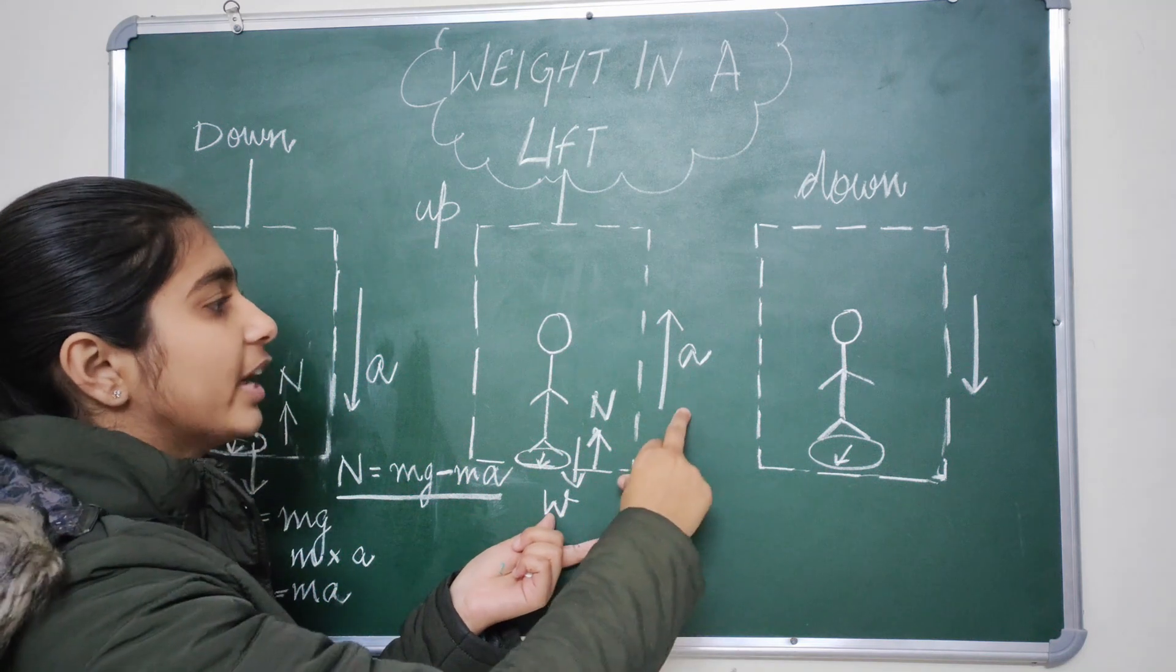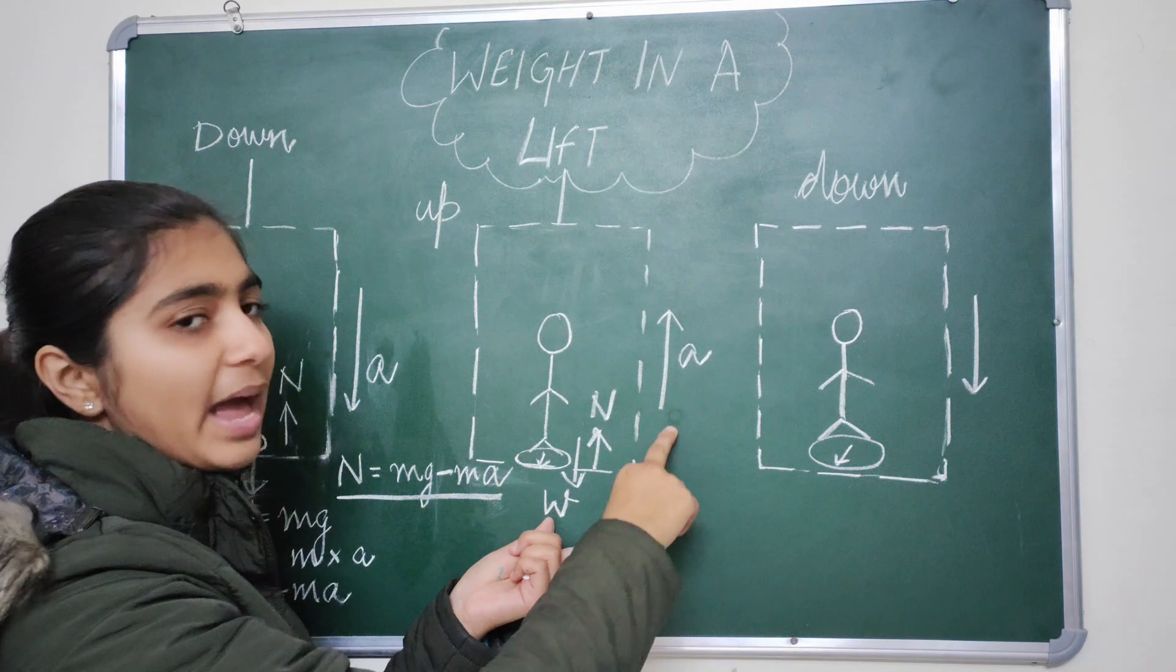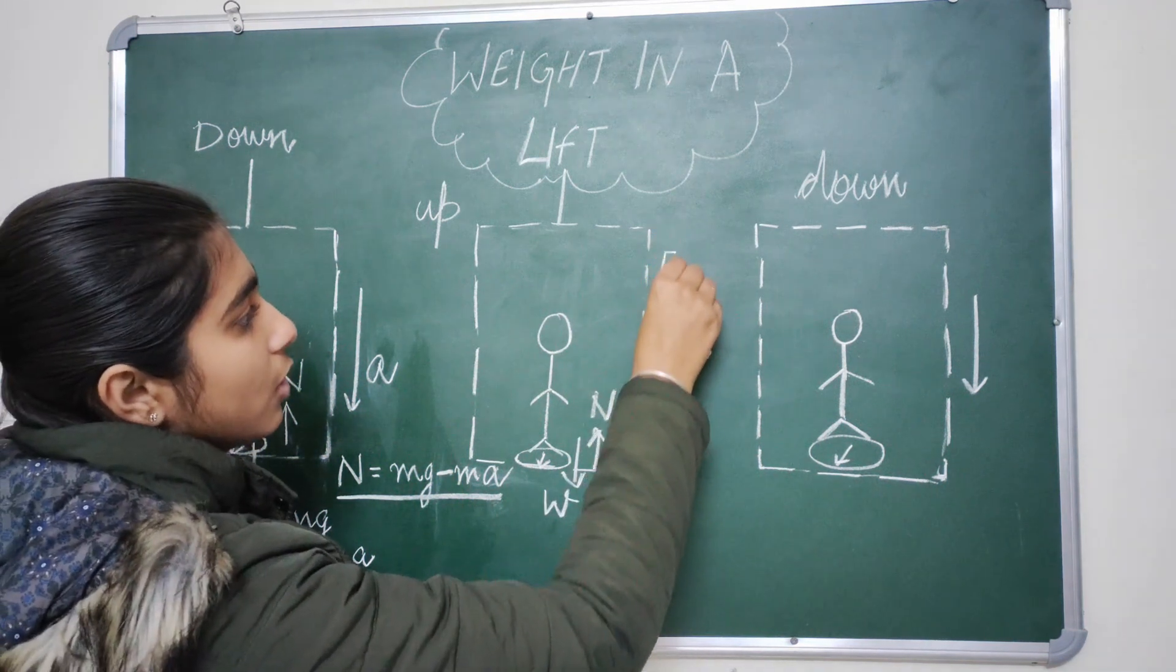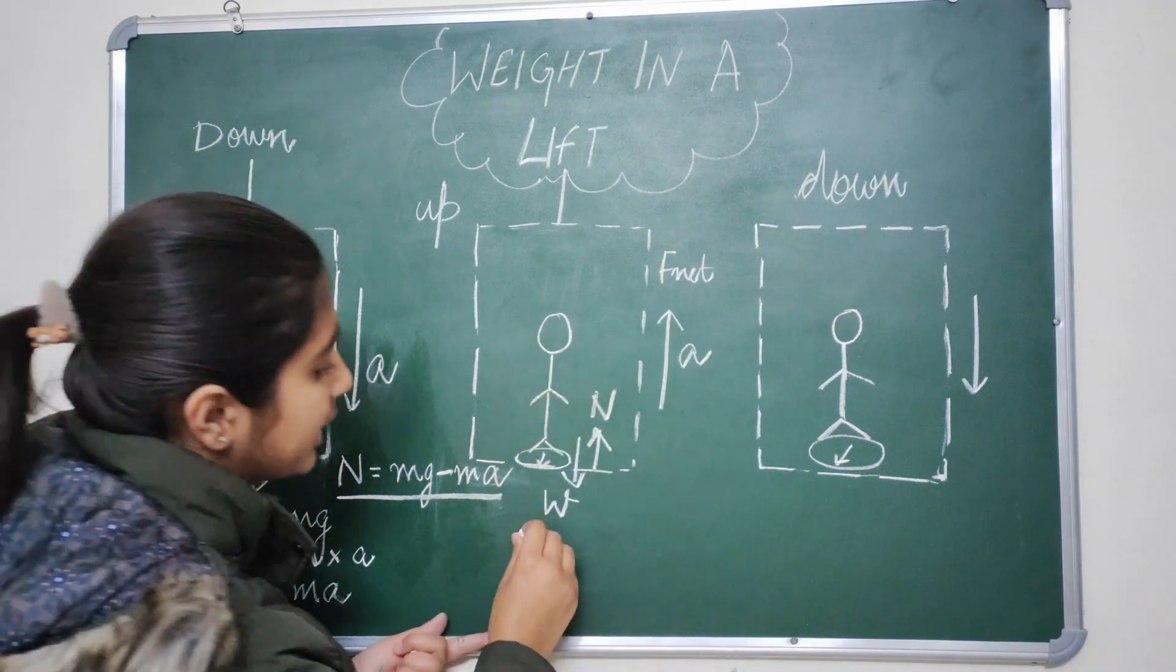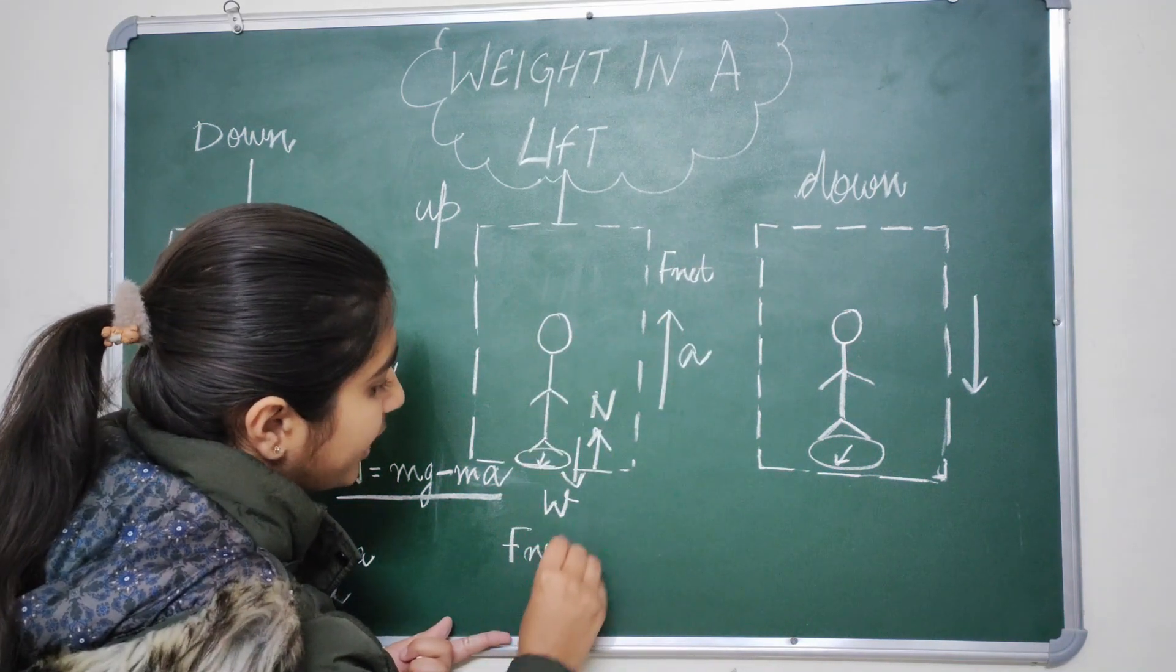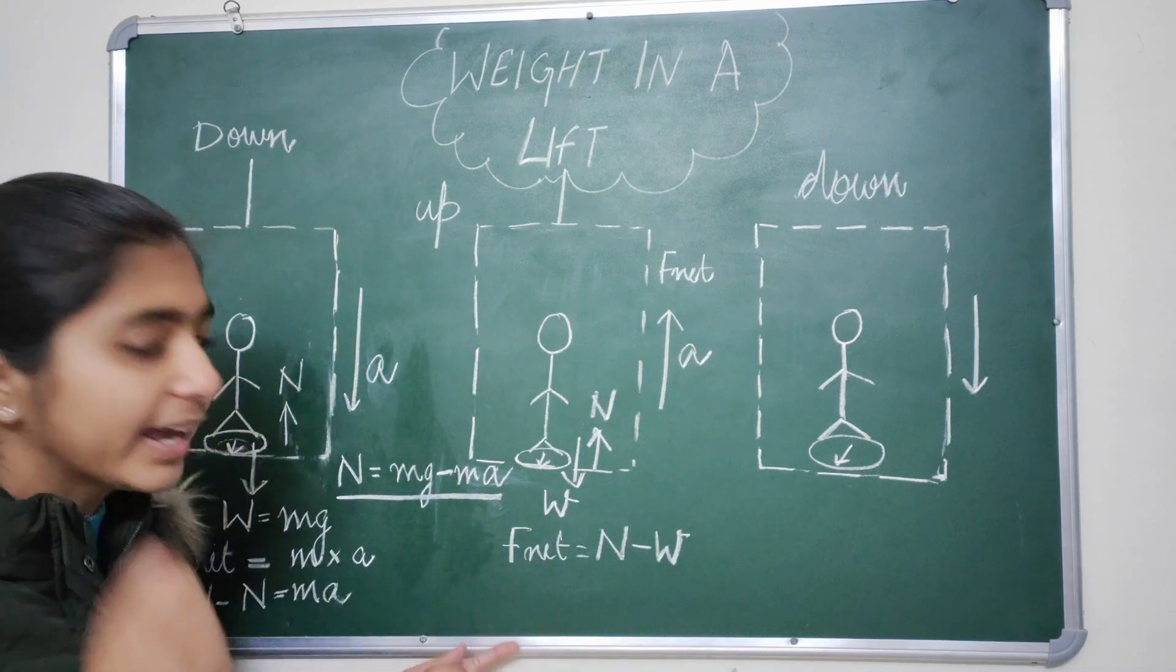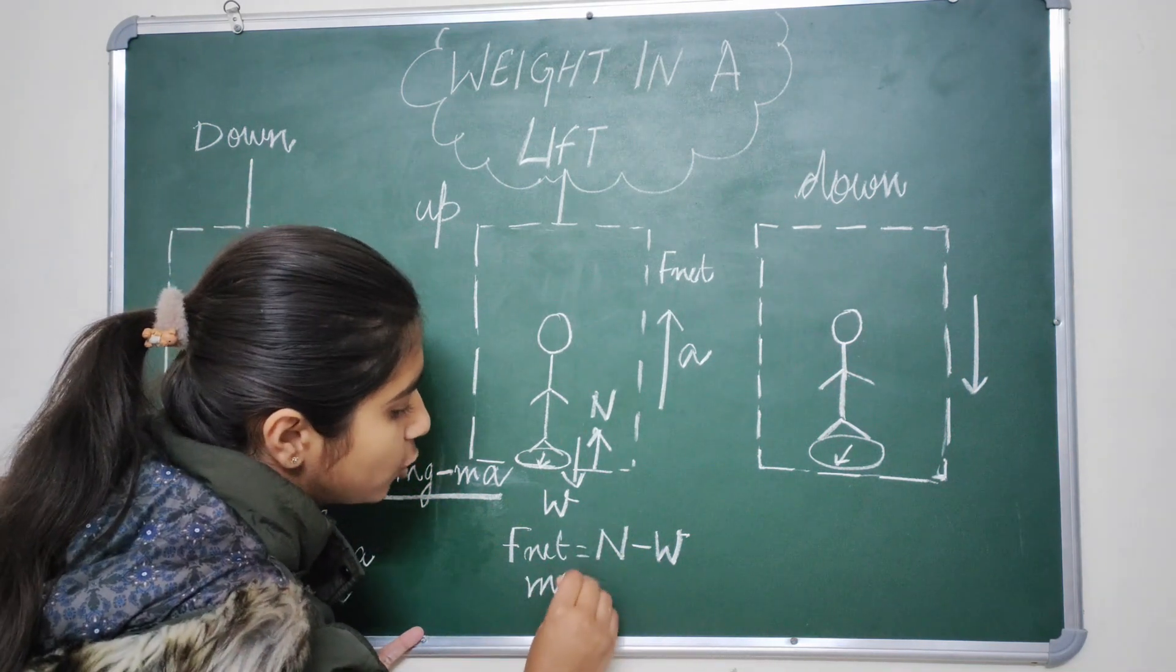If the system is going in upward direction and it is experiencing some acceleration in the upward direction, the net force is acting in the upward direction. So the net force can be written as N minus W and from the second law of Newton, we know that the net force equals M into A, that is the mass into the acceleration experienced by this body.